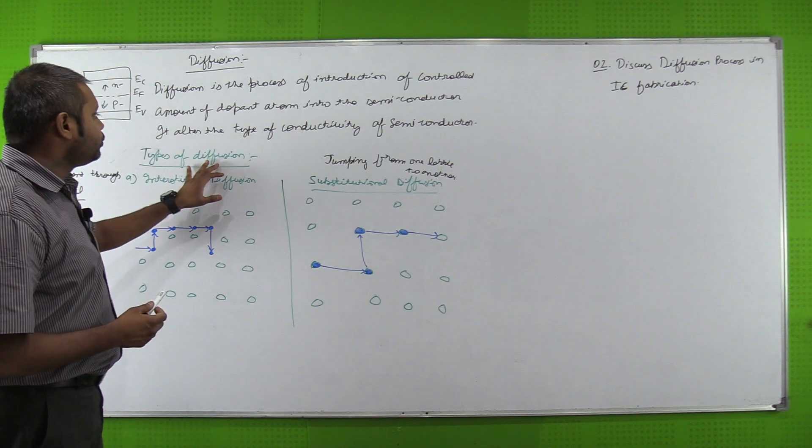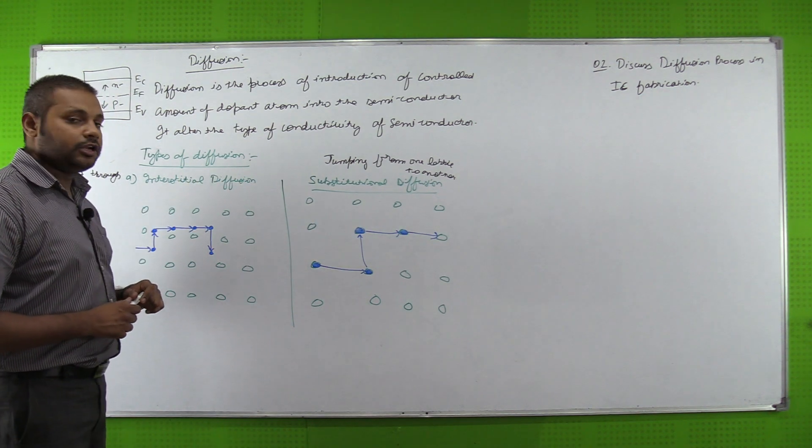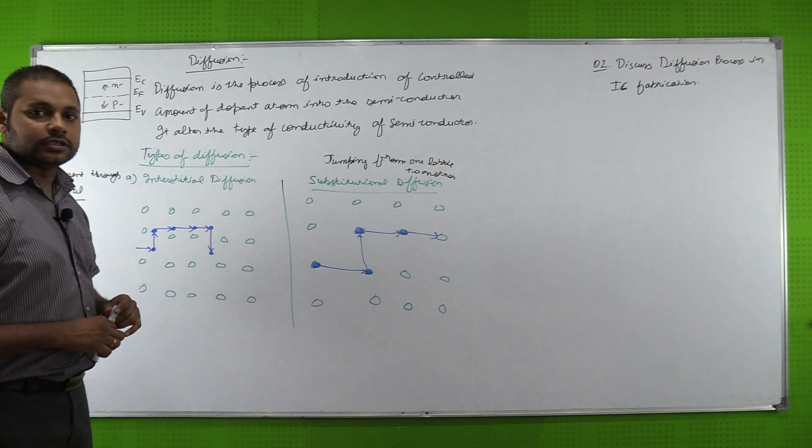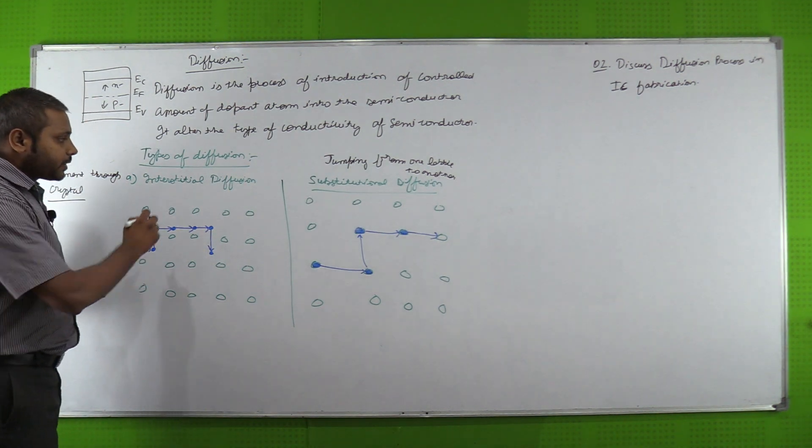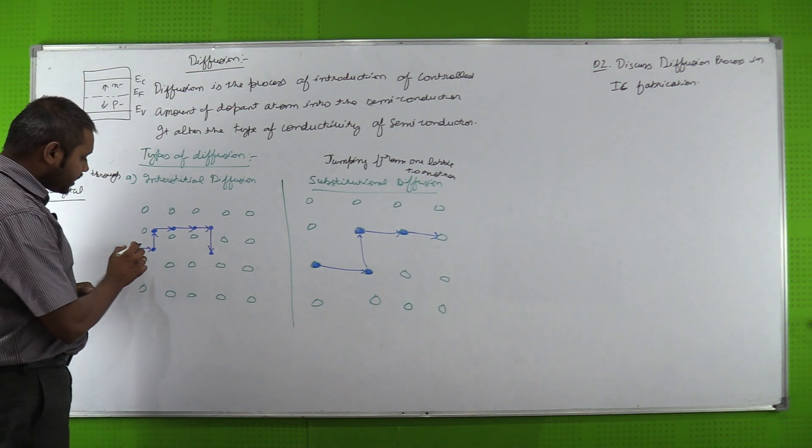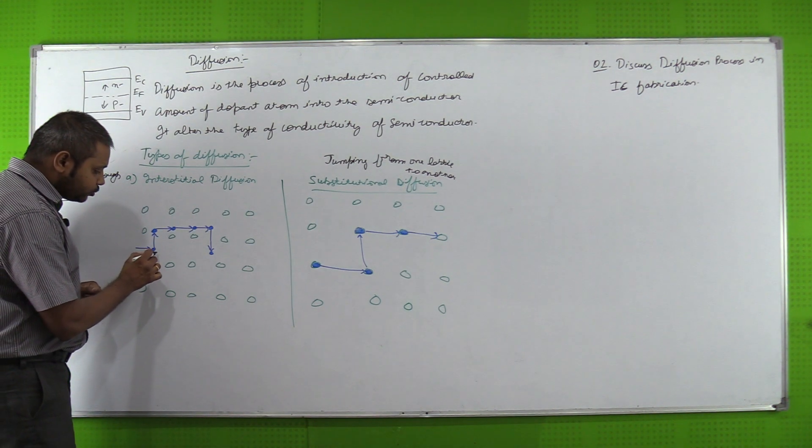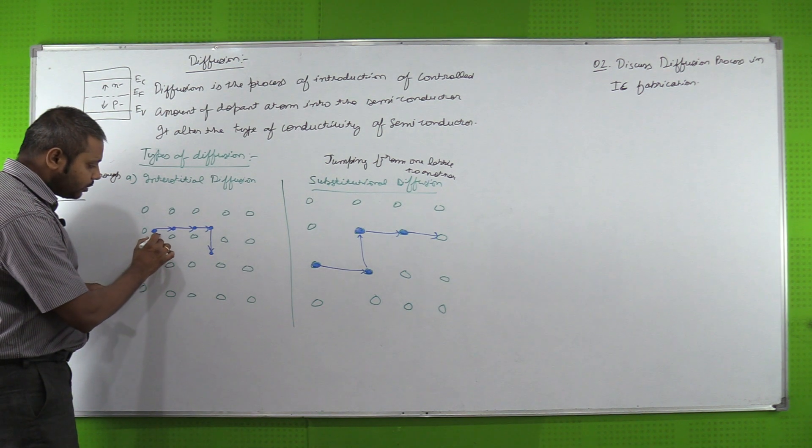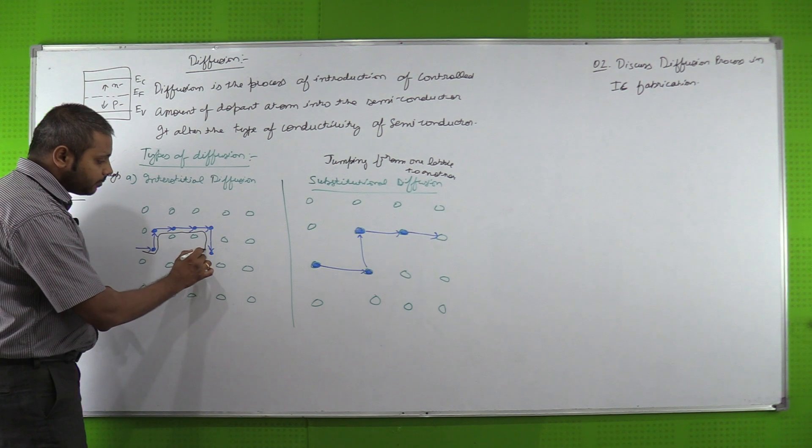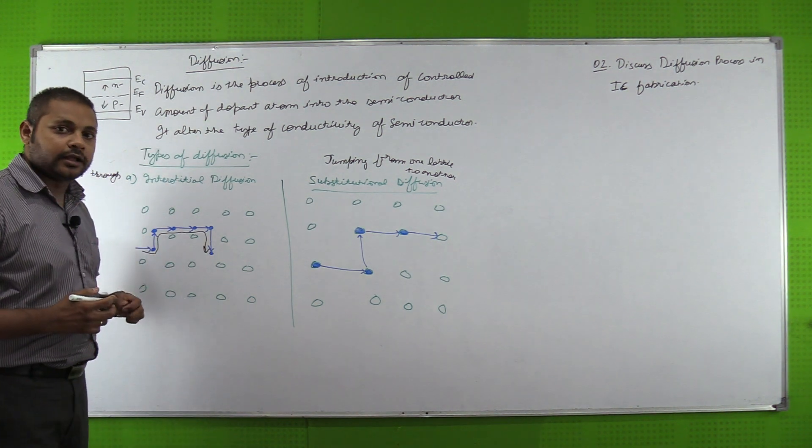Now we have two types of diffusion. First one is interstitial diffusion. So as I have made a diagram, if I look at interstitial diffusion, what is happening? The lattice space, not the atom but the lattice space, is where my dopant atom reaches a particular position.